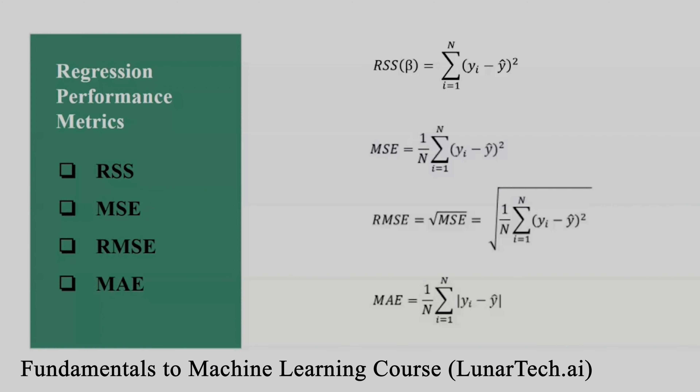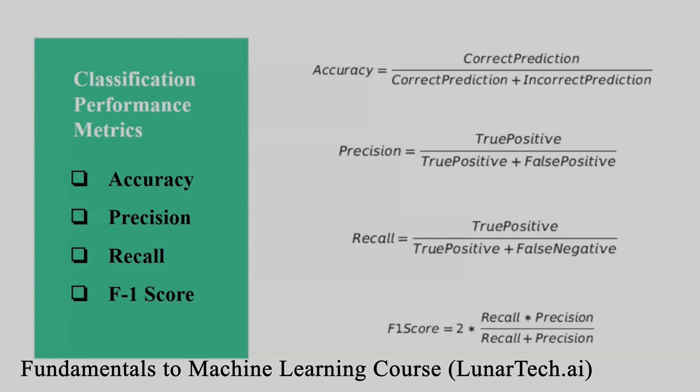For classification type problems, we can use cross-entropy, also known as log loss, to evaluate the performance of the deep learning model. This is particularly useful for binary classification. Other loss functions for classification include precision, recall, the F1 score, or the Fbeta score, which is a more general version of F1 score used when we know whether recall or precision is more important. The F1 score is used when we want a good balance between precision and recall, giving 50% importance to each.